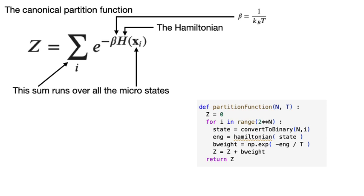The function is then relatively simple. This loop here iterates over all the microstates for this system of N particles that can each be in two states.